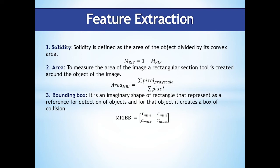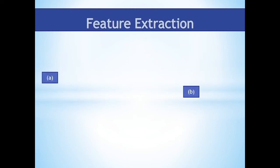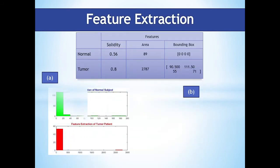A bounding box is an imaginary rectangle that serves as a reference for detection of objects, creating a collision box around that object. These boxes are drawn onto the image around the region of interest along vertical and horizontal axes. To calculate a bounding box on two-dimensional data, we find the minimum and maximum values of rows and columns: R_min, R_max, C_min, and C_max. The figure shows the extracted features and segmented MRI images for both brain tumor and normal cases.